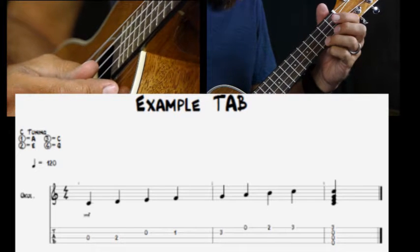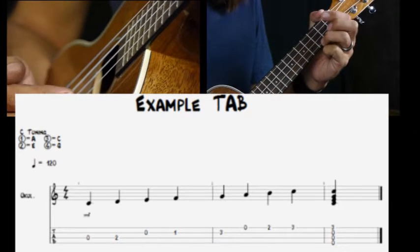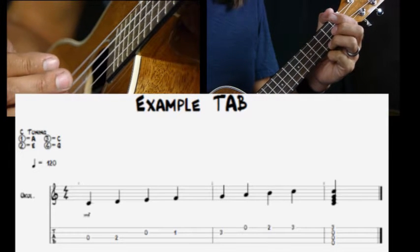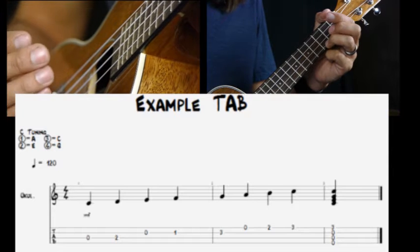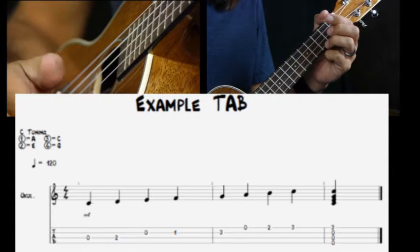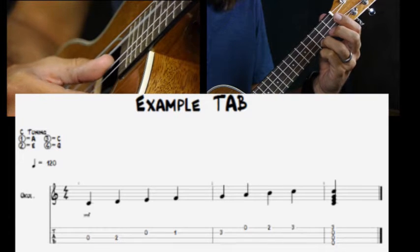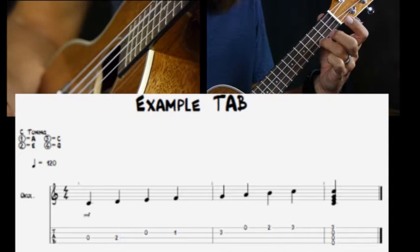Now you'll see the last bar there, you have numbers on top of each other. So in tab, when you have, just like music notation, when the notes or numbers are on top of each other, that means it's a chord. You play those notes at the same time. So there we have zero, zero, zero, three on the A string. It's a C major chord.